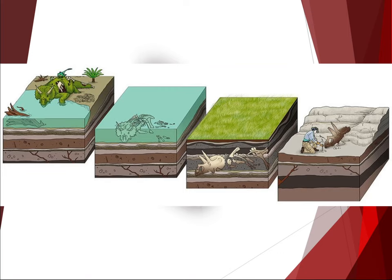When most organisms die, they rot and leave no trace of their existence. Because of this, fossils are formed very rarely. Most fossils form in environments where deposition is taking place. Sediments, such as mud or fine volcanic ash, provide the best environment for fossilization. Organisms that die on dry land are less likely to be fossilized than those that die in lakes or shallow seas, which produce lots of fossils. Organisms from these environments are much more common in the fossil record.